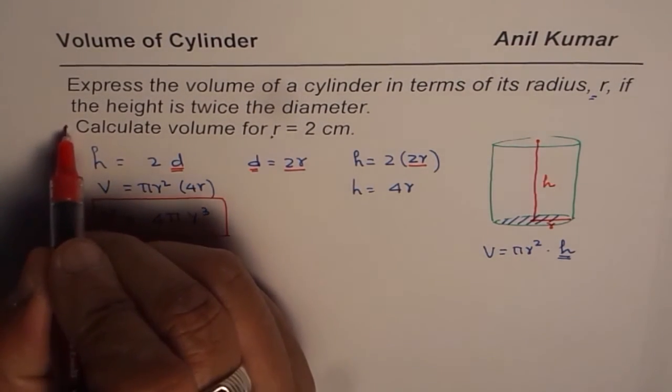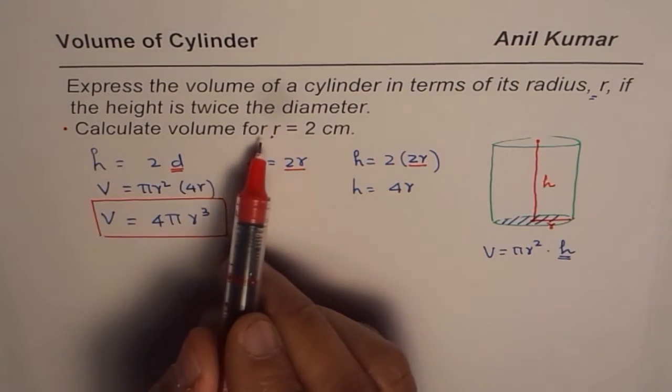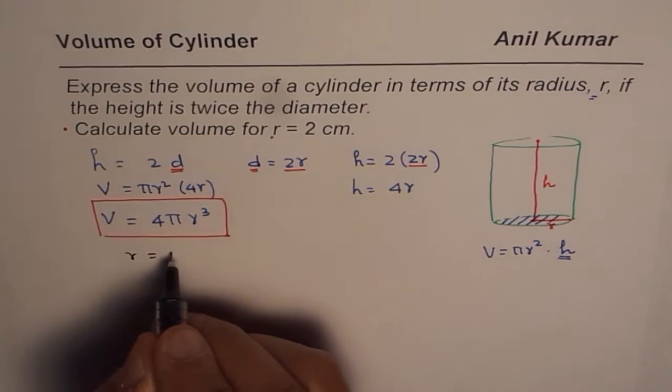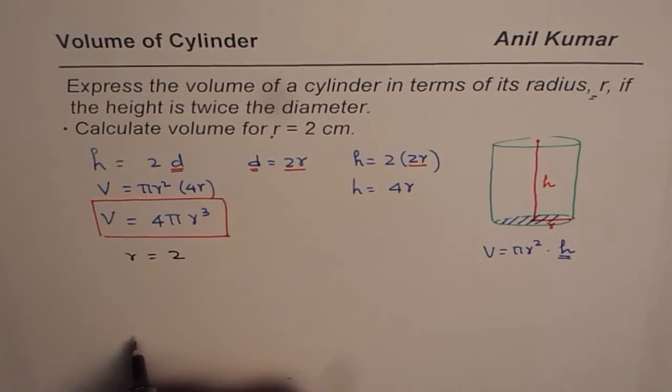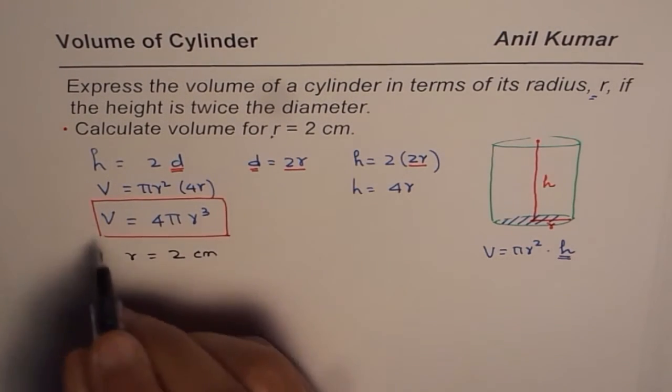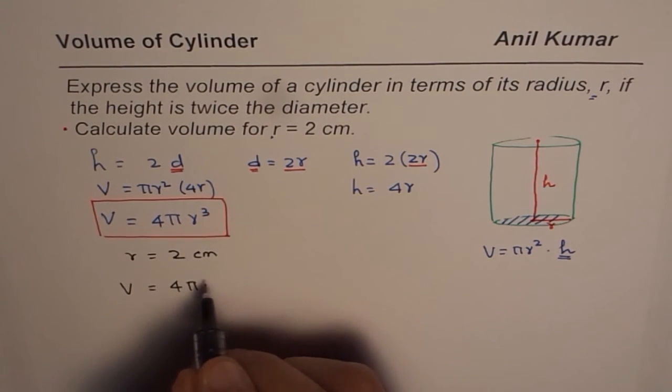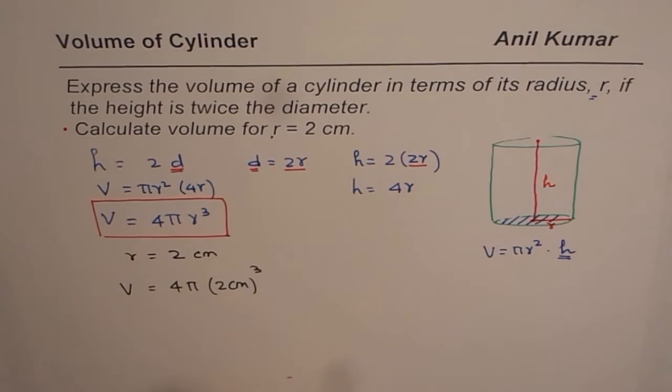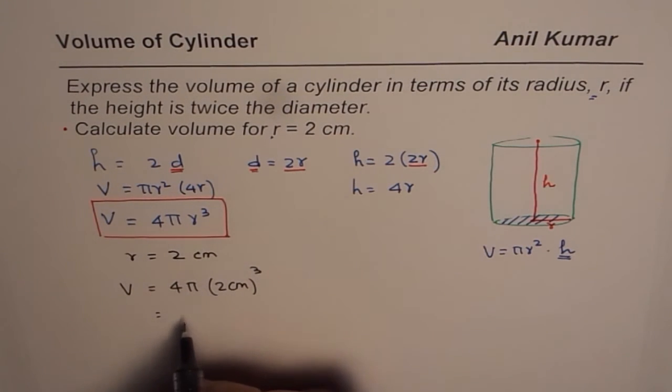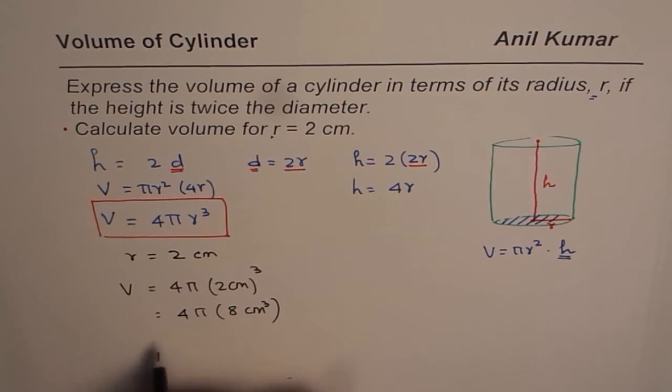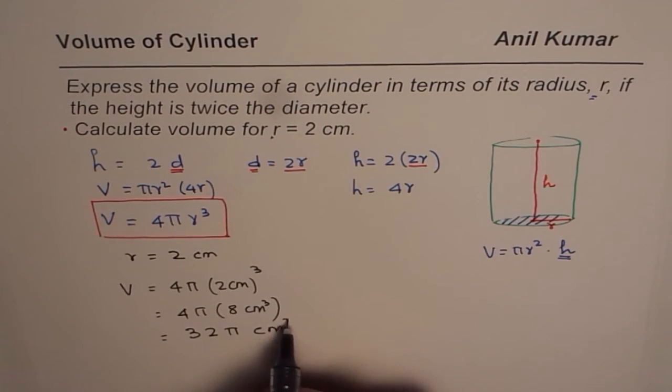Now second part of this question is calculate volume for r equals to 2. So now we have given r equals to 2. We need to calculate volume. It is 2 centimeters. So let us substitute 2 centimeters for r. So we get 4 pi 2 centimeters whole cube. As you know, 2 cube is 8. You can use a calculator actually. So we get 8 centimeter cube. When you multiply, 8 times 4 is 32. So we get 32 pi centimeter cube.